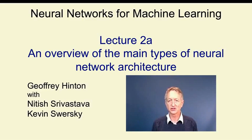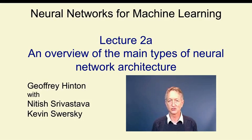In this video, I'm going to describe various kinds of architectures for neural networks. What I mean by an architecture is the way in which the neurons are connected together. By far the commonest type of architecture in practical applications is a feed-forward neural network, where information comes in at the input units and flows in one direction through hidden layers until it reaches the output units. A much more interesting kind of architecture is a recurrent neural network, in which information can flow round in cycles.